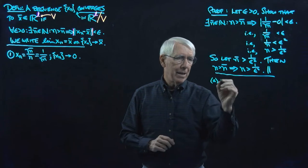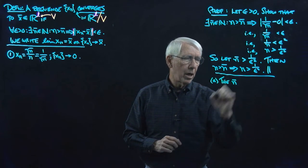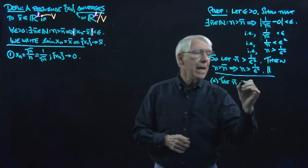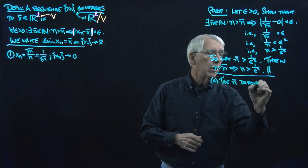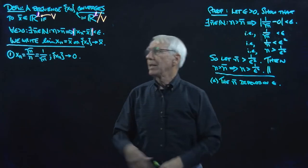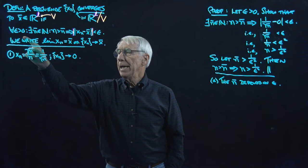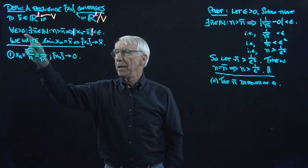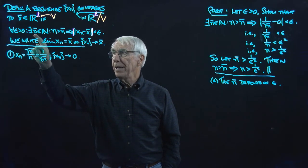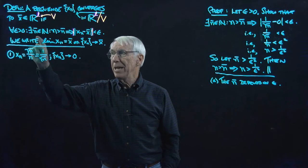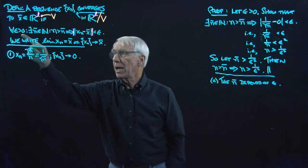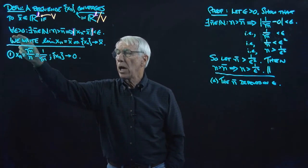One: notice that the N̄ that I end up using depends on the epsilon. This says: for any epsilon, I've got to find an N̄. But as epsilon moves and changes — say, to a smaller epsilon — the N̄ that I found for the other epsilon may not work; I may have to find another N̄.